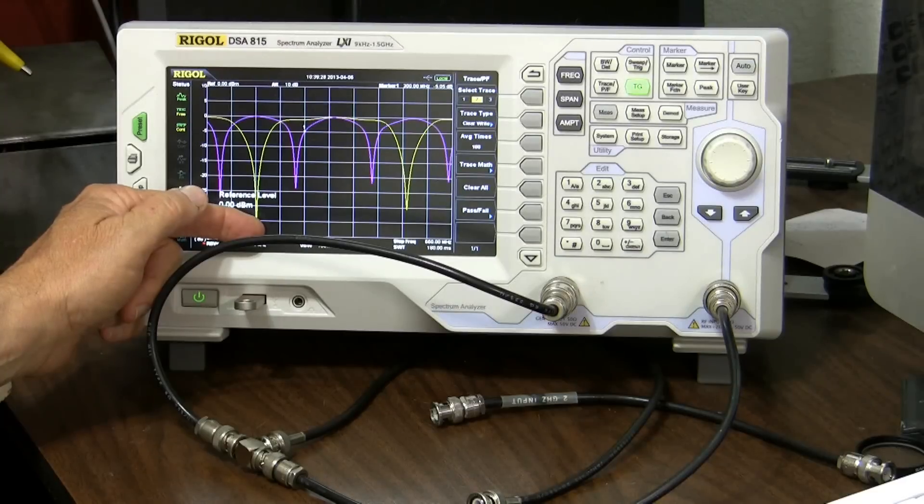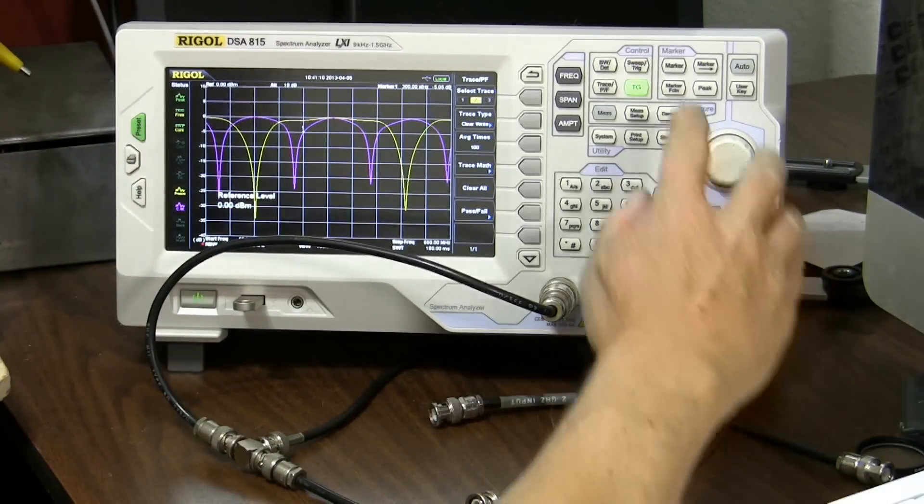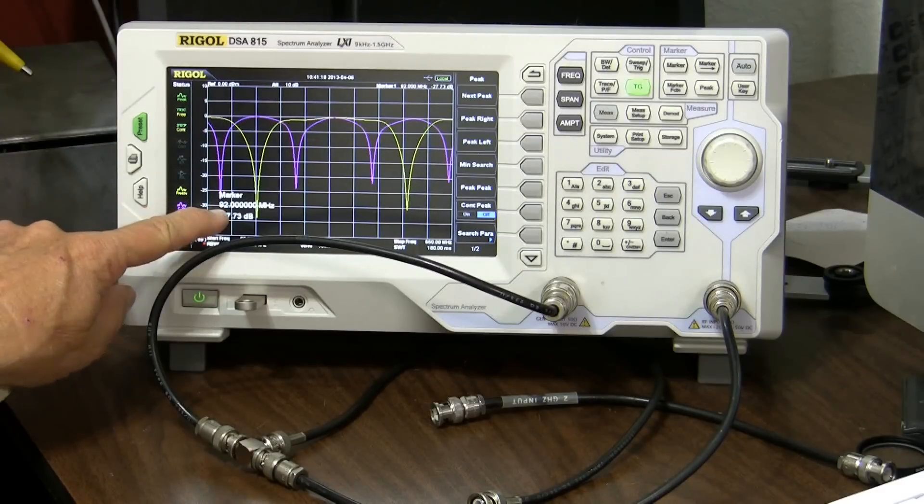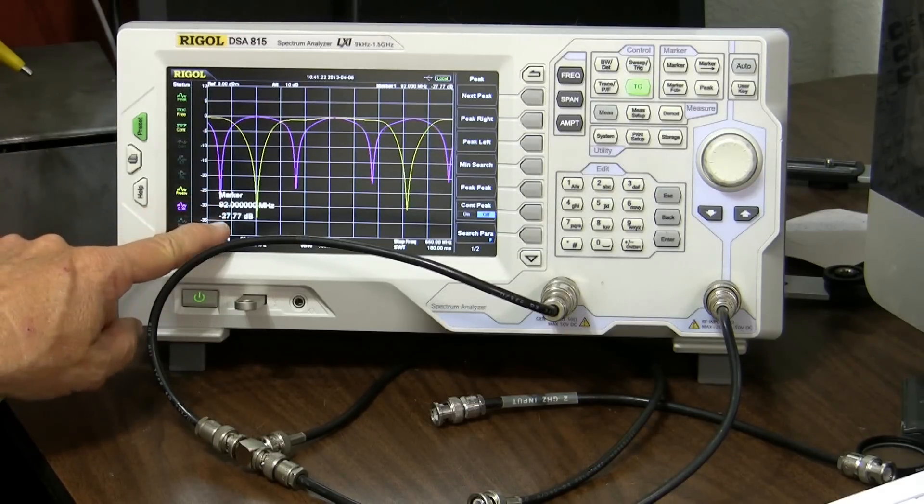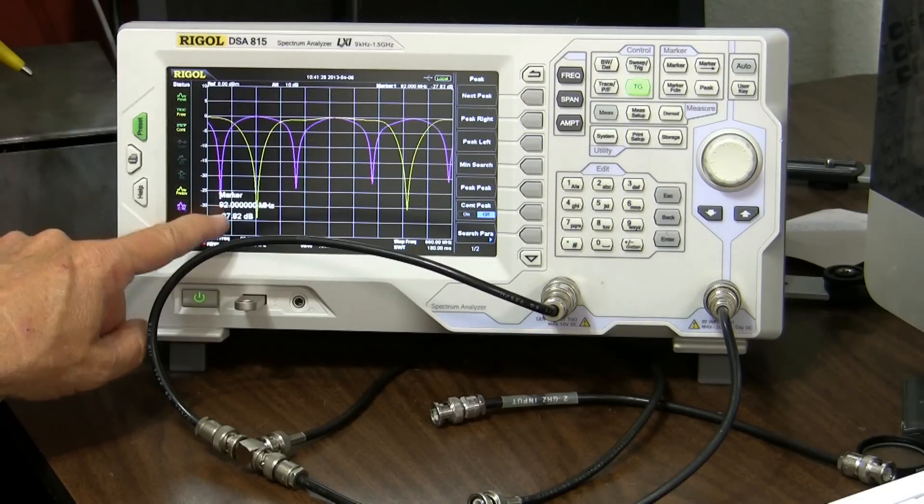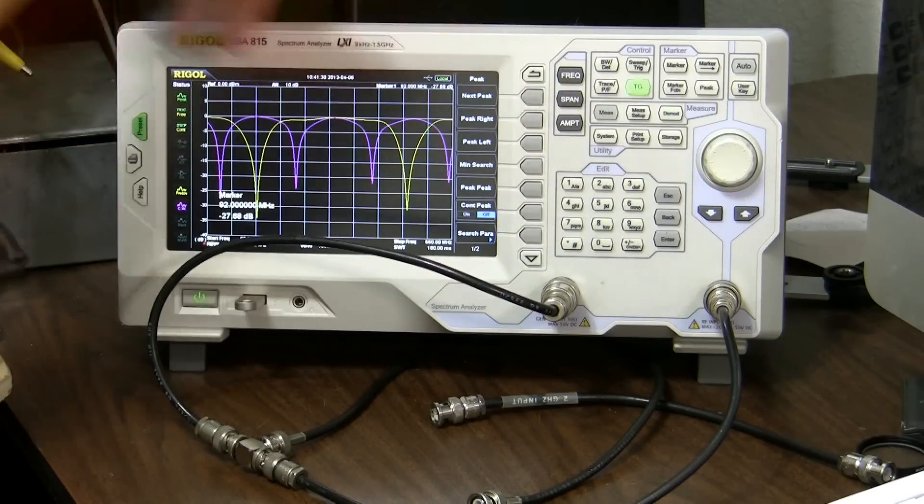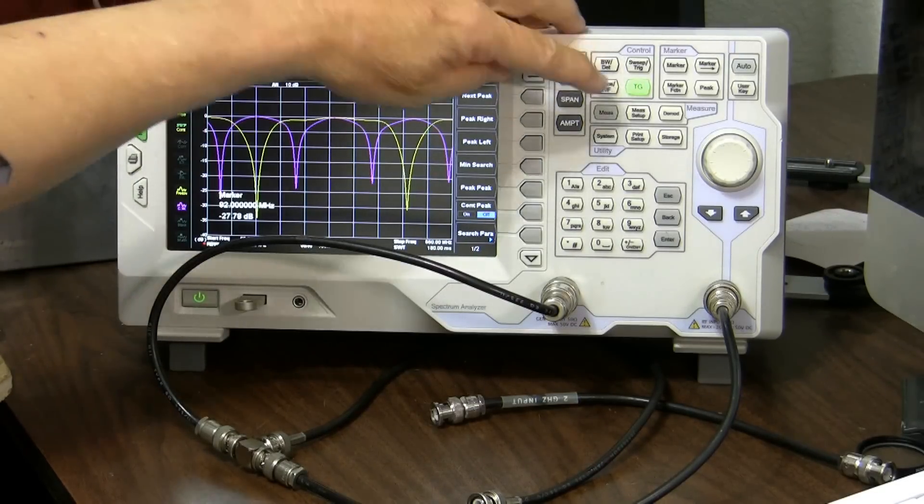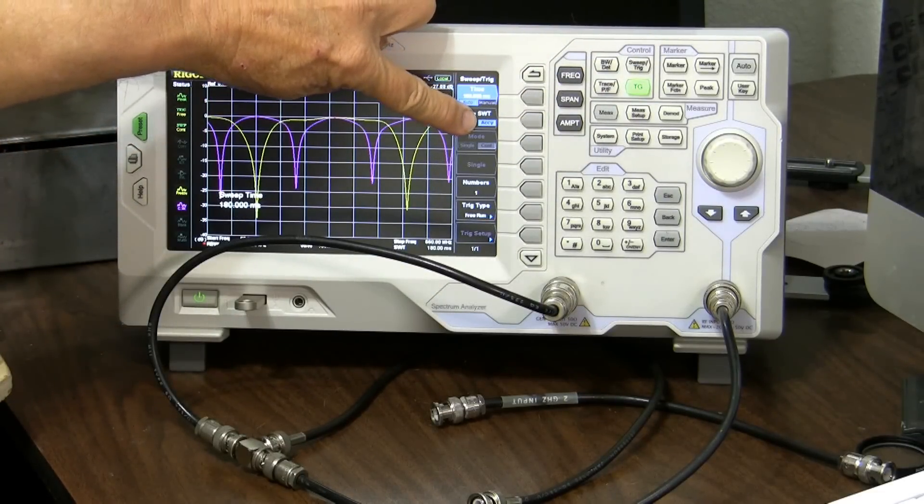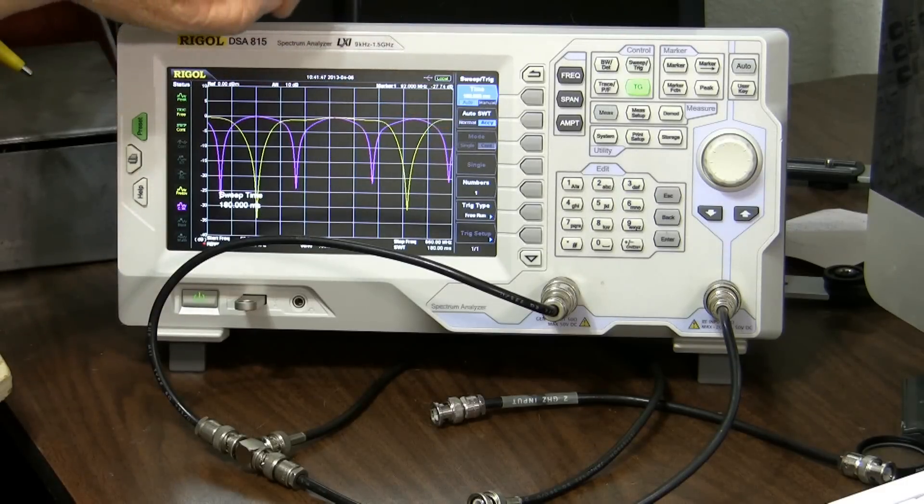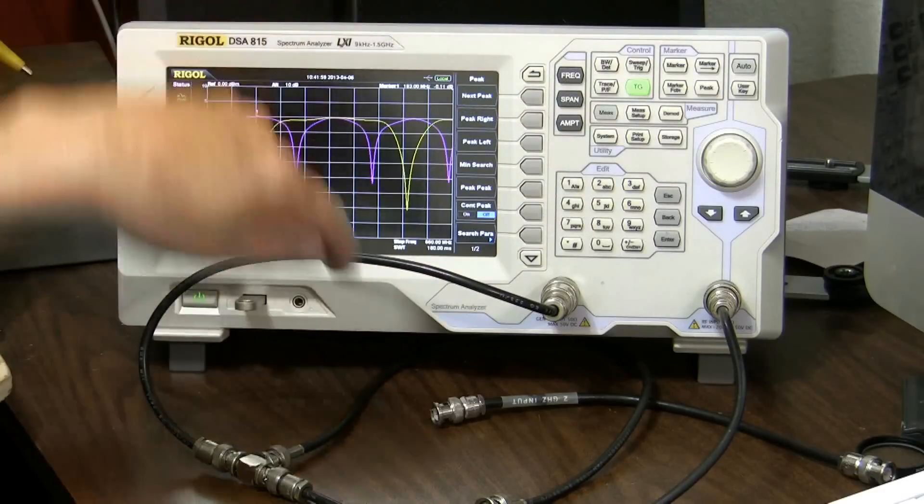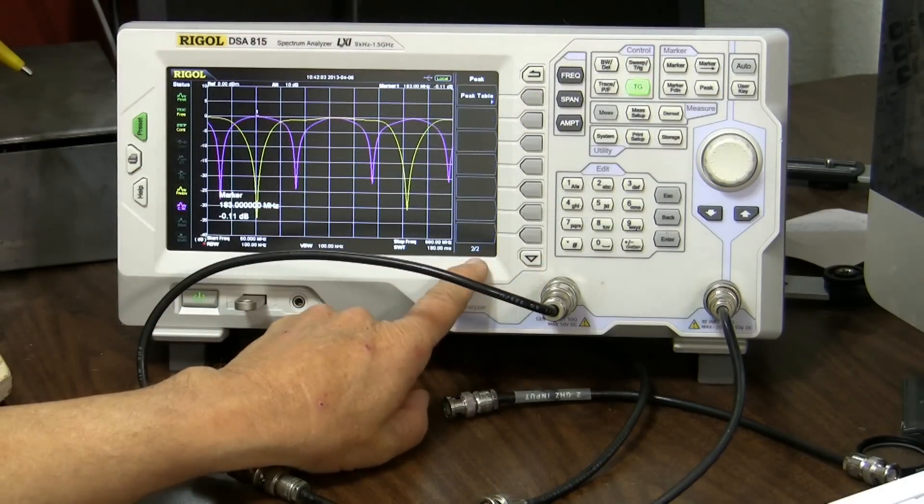Let's use the peak marker and find a minimum search here which gives us the minimum peak which happens to be right here, 92 megahertz. This will be a little less accurate because of the fact that we are in such a wide sweep and there's only 600 points across here. But let's also make sure we have it as accurate as possible by going back to sweep and making sure we're on ACCY which is accuracy for the auto sweep time. So we should be as accurate as we can be. Sweep time is about 180 milliseconds which is a reasonable amount.